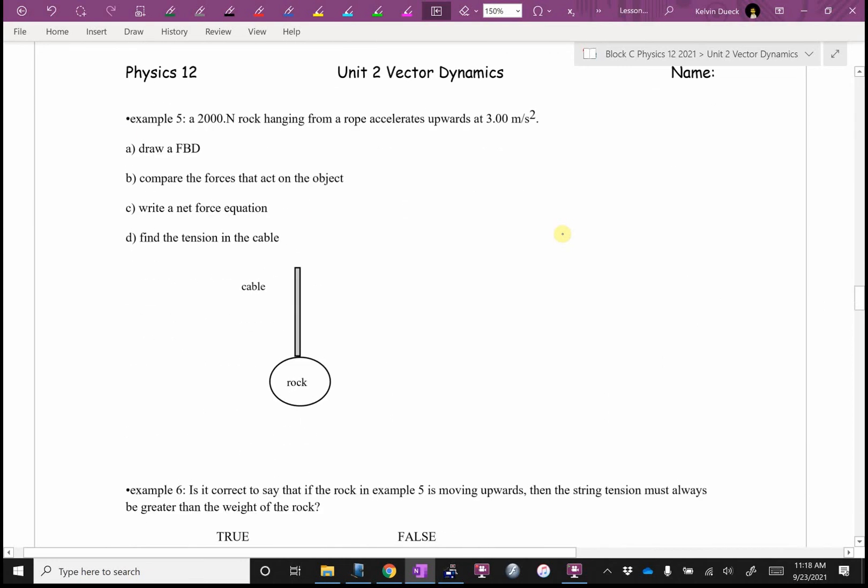Example five, a 2,000 Newton rock hanging from a rope accelerates upwards at three meters second squared. A says, draw a free body diagram. I'm going to do my free body diagram right here. There's the mass. What are the forces acting on this mass? Get the obvious one. We went systematically. So get the obvious one. I know gravity is acting downwards, and I calculate that by MG.